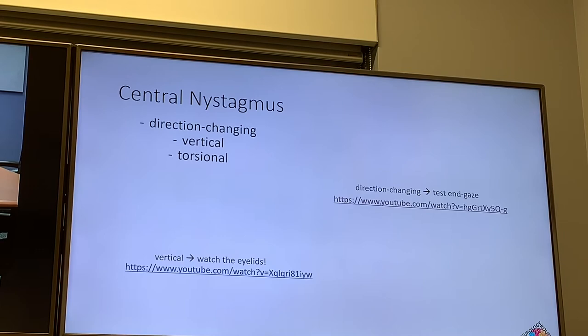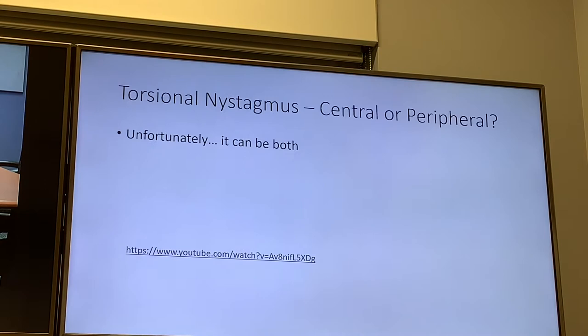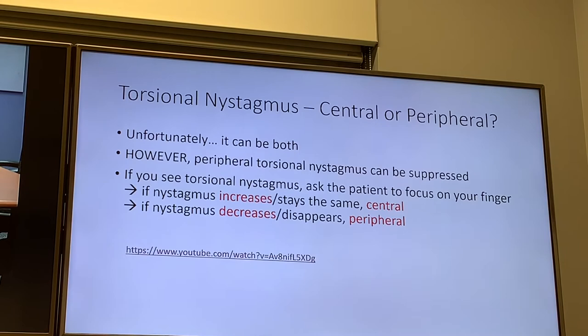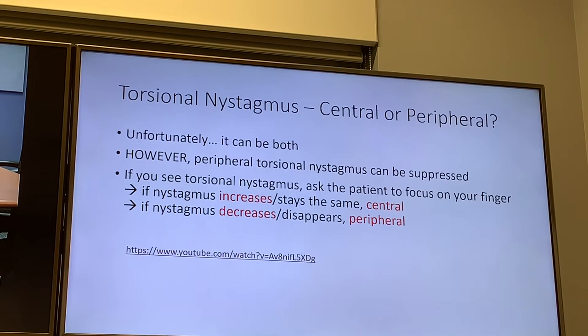Torsional nystagmus can be either central or peripheral. The trick to differentiate: peripheral torsional nystagmus can be suppressed by having the patient focus on your finger. If the nystagmus increases or stays the same with fixation, it's more likely central; if it can be suppressed, it's peripheral.